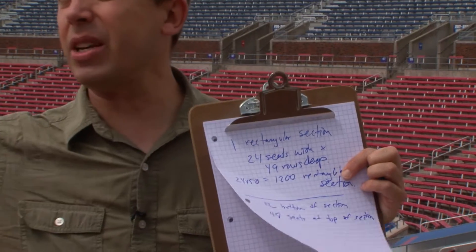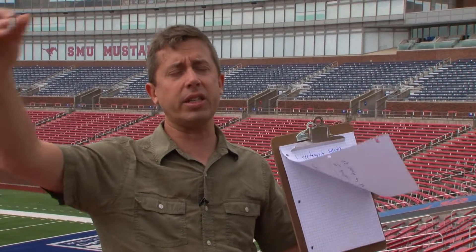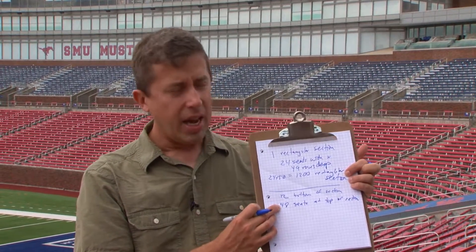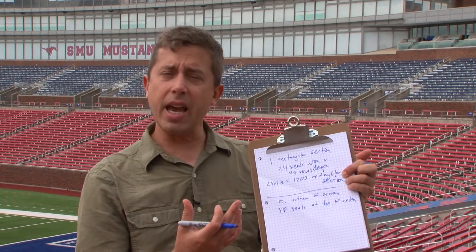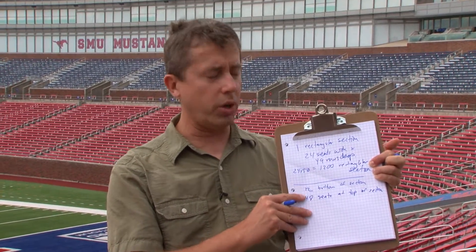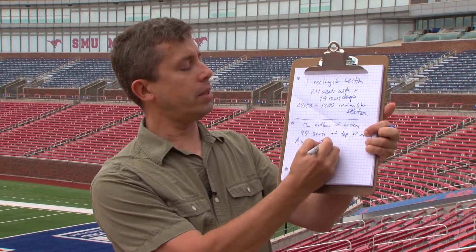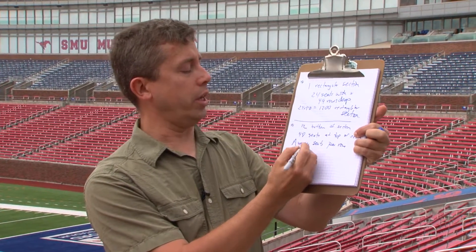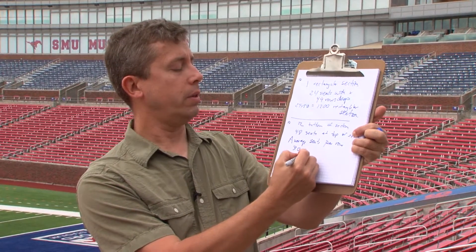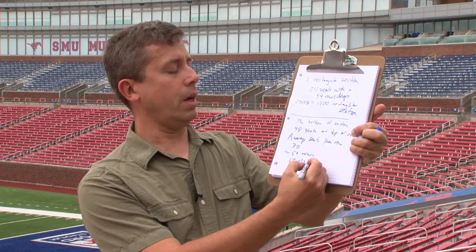To estimate the total seats in a corner section, I note that the seats are growing linearly — every row's width follows a straight line. When that's the case, as you'll see in the formula for the area of a trapezoid, you can use the average number of seats per row between the shortest and longest and multiply by the number of rows. The average seats per row is 30, and there are about 50 rows, so we estimate 1,500 seats in a corner section.